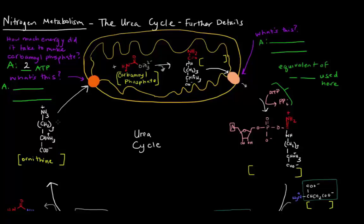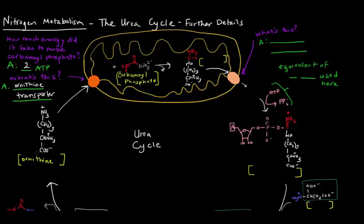Ornithine is initially in the cytosol of the liver cell. It needs to get into the liver mitochondrial matrix in order to join with carbamoyl phosphate, so it needs this protein here — an ornithine transporter — that allows it to transport into the mitochondrial matrix. Once that transporter gets ornithine into the mitochondrial matrix, it joins with carbamoyl phosphate and a phosphate group pops off. The resulting molecule is called citrulline, which basically has the carbamoyl portion of carbamoyl phosphate tacked onto ornithine at this amino group here.